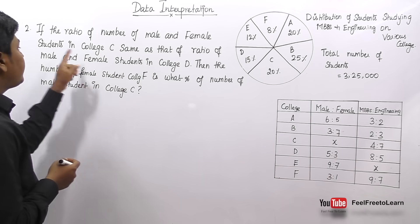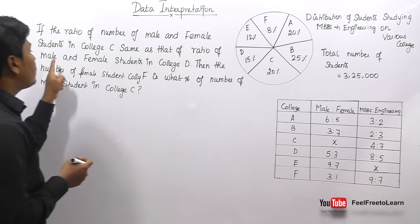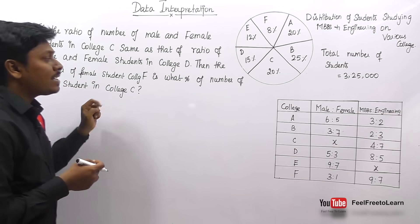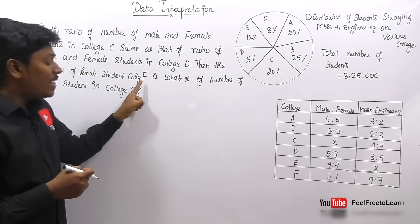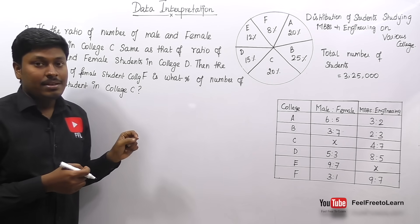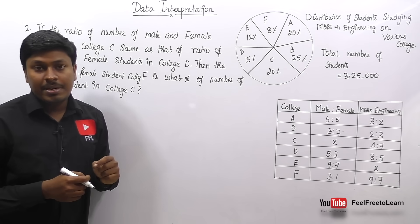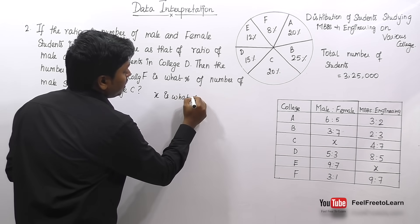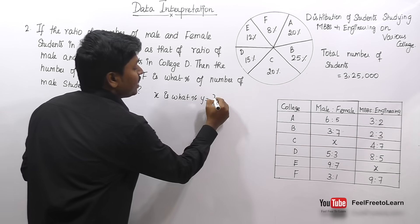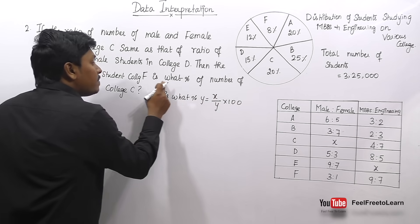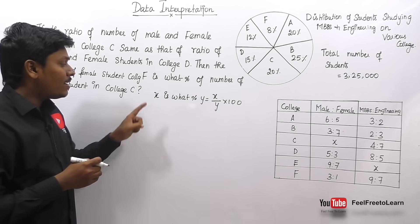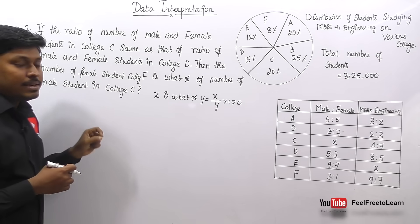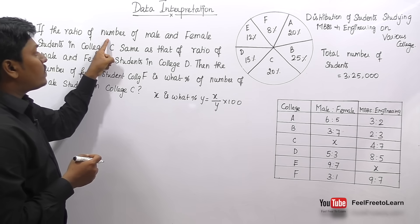Question 2: If the ratio of male and female students in college C is the same as in college D, then the number of female students in college F is what percentage of the number of male students in college C? When you see 'x is what percentage of y', use the formula: (x ÷ y) × 100.